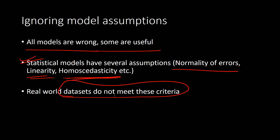Researchers, without properly treating violated assumptions, go ahead with the research and communicate results to the public — which is basically wrong research leading to misleading conclusions. Even in so-called high-quality research in political science, sociology, nutrition science, and economics, people make tall claims based on regression models even after discussing why the dataset doesn't meet the model's assumptions, thereby misleading audiences who don't understand those assumptions.